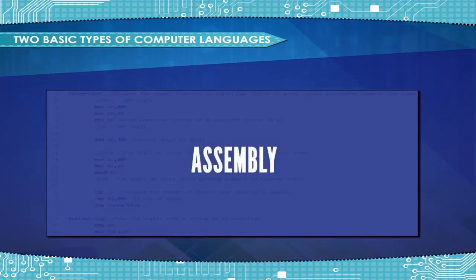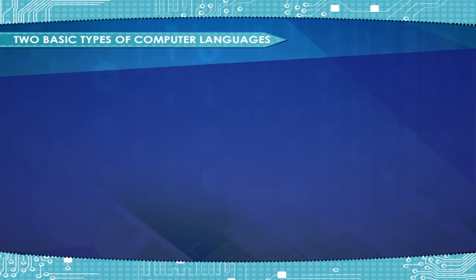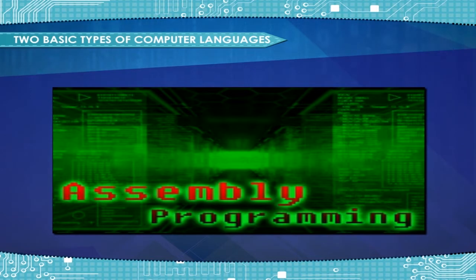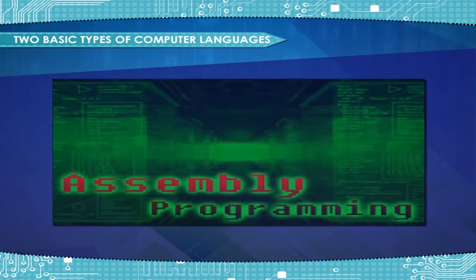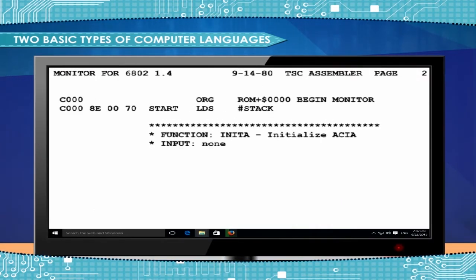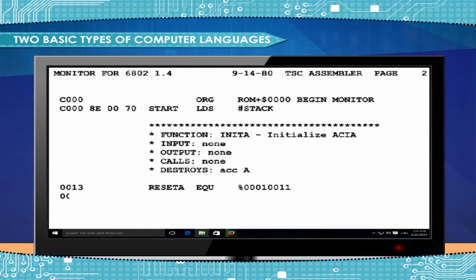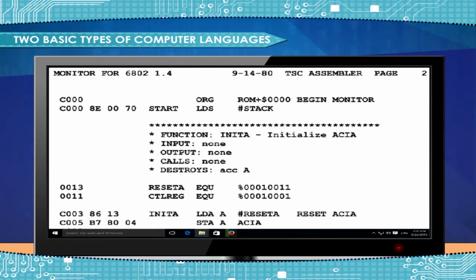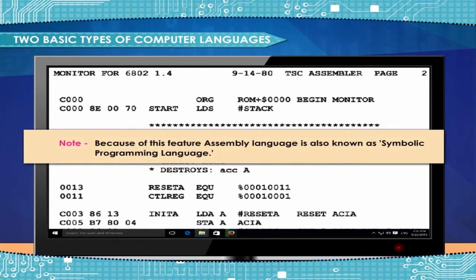Assembly language is a slightly more user-friendly language that directly corresponds to machine language. It was developed to overcome some of the many inconveniences of machine language. In assembly language, operation codes and operands are given in the form of alphanumeric symbols instead of zeros and ones — these are called mnemonics. Because of this feature, assembly language is also known as symbolic programming language.